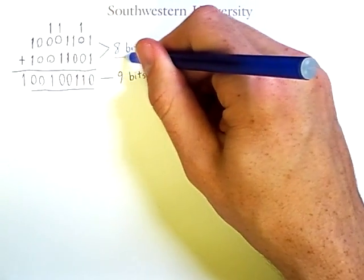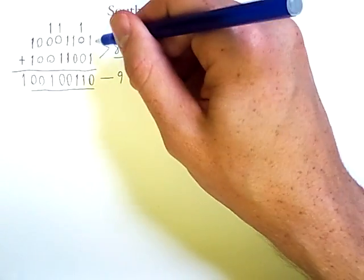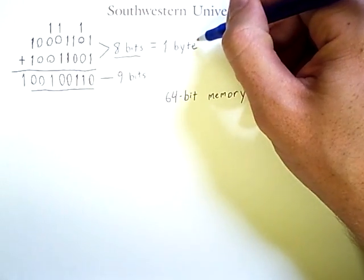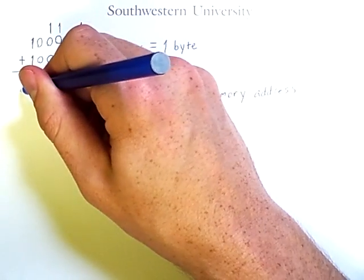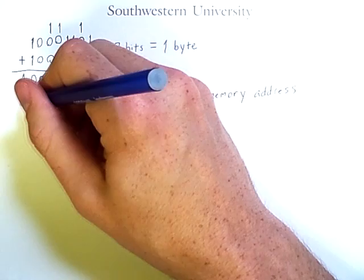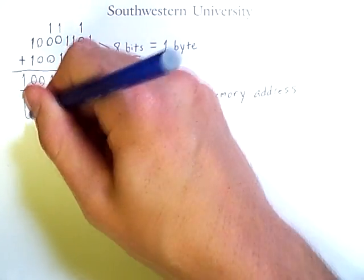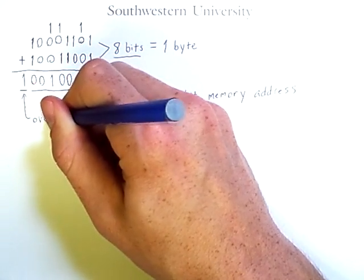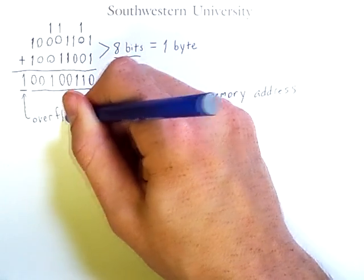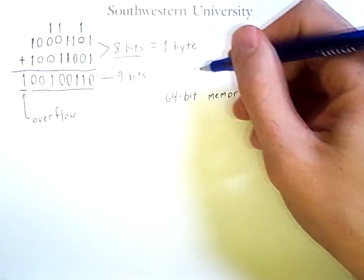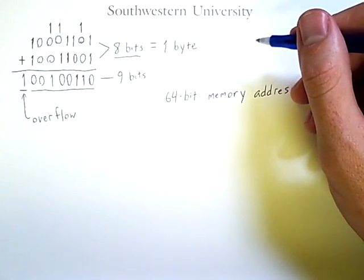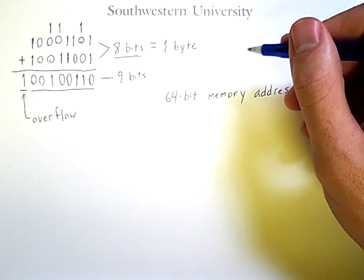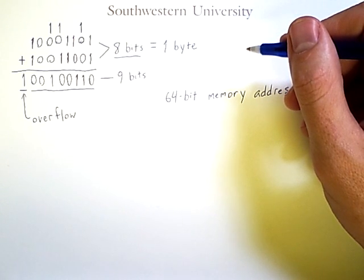If you were using an eight-bit computer and adding these two bytes, this result here would be referred to as overflow. This is what happens when an addition or other operation results in a number becoming too large to be stored in a single memory address.